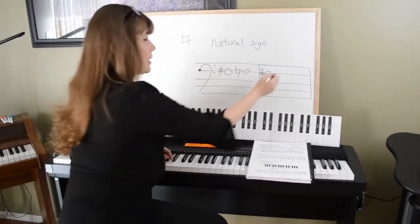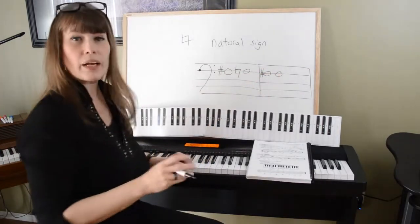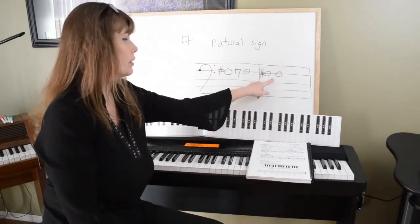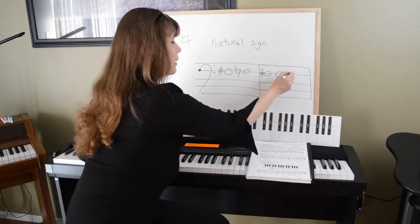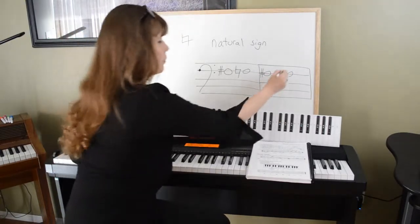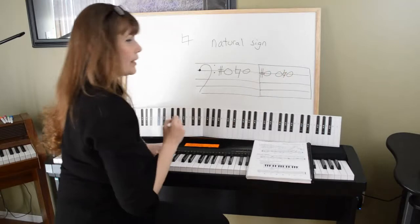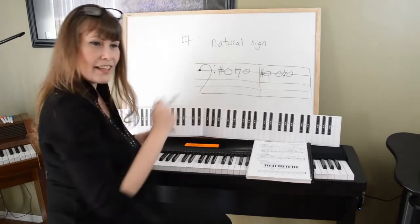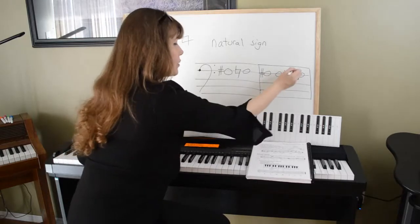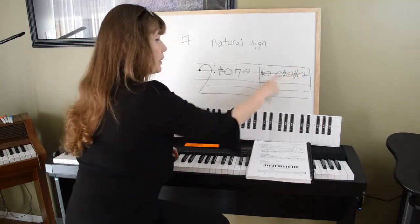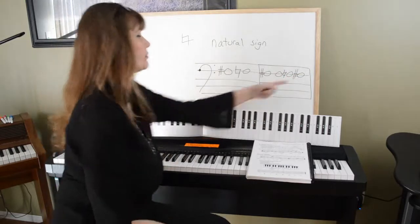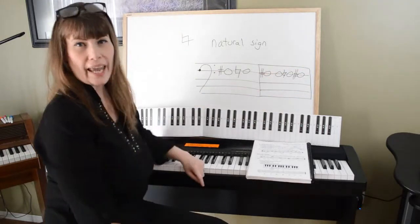If I wanted another F in my music and I wanted it sharp, I don't need to rewrite that sharp. But if I wrote another F and didn't want it sharp anymore, I would use my natural sign. Then if I wanted another F sharp, I would need to re-sharp it because I naturaled it in that same bar, and then the bar line cancels it.